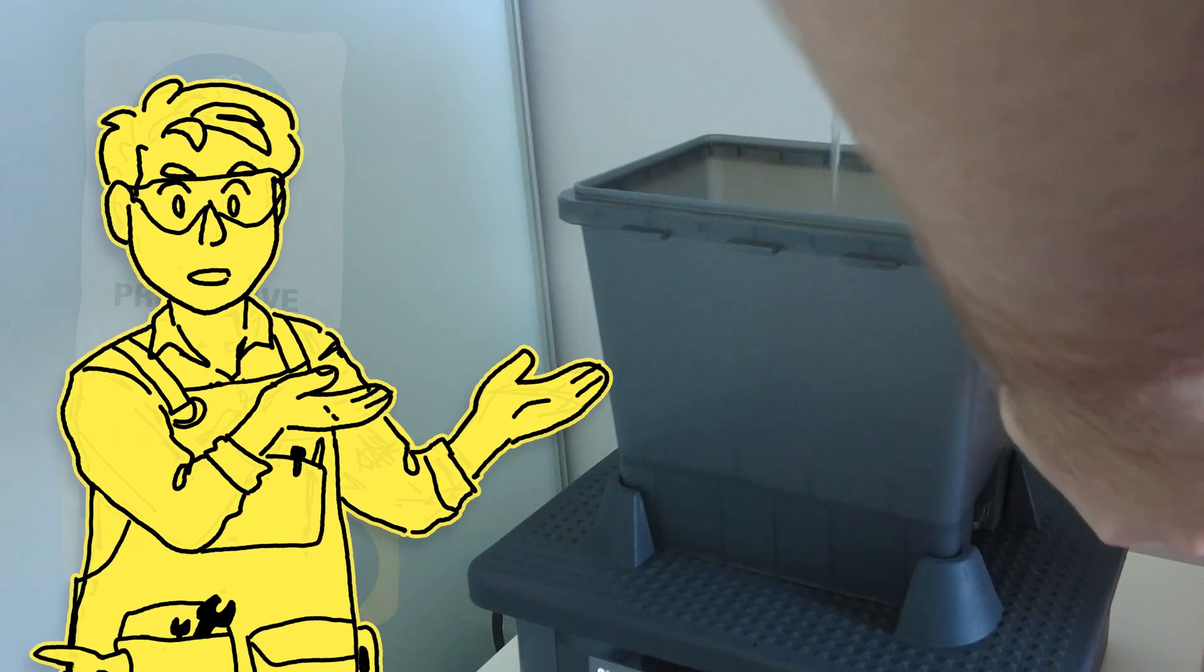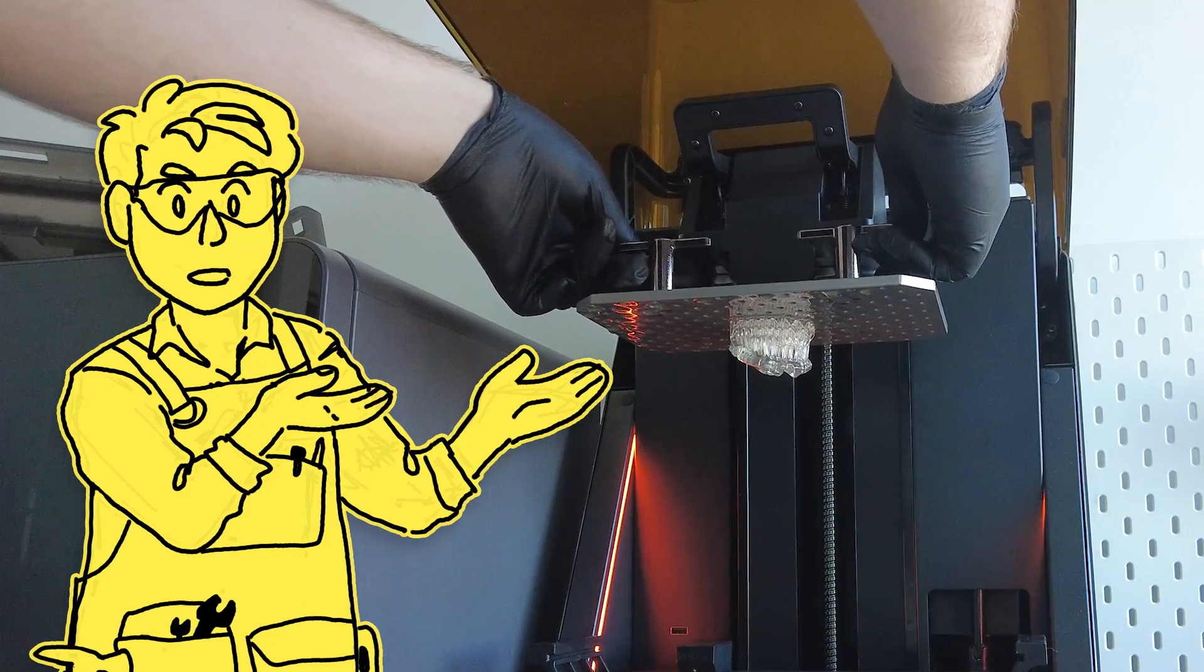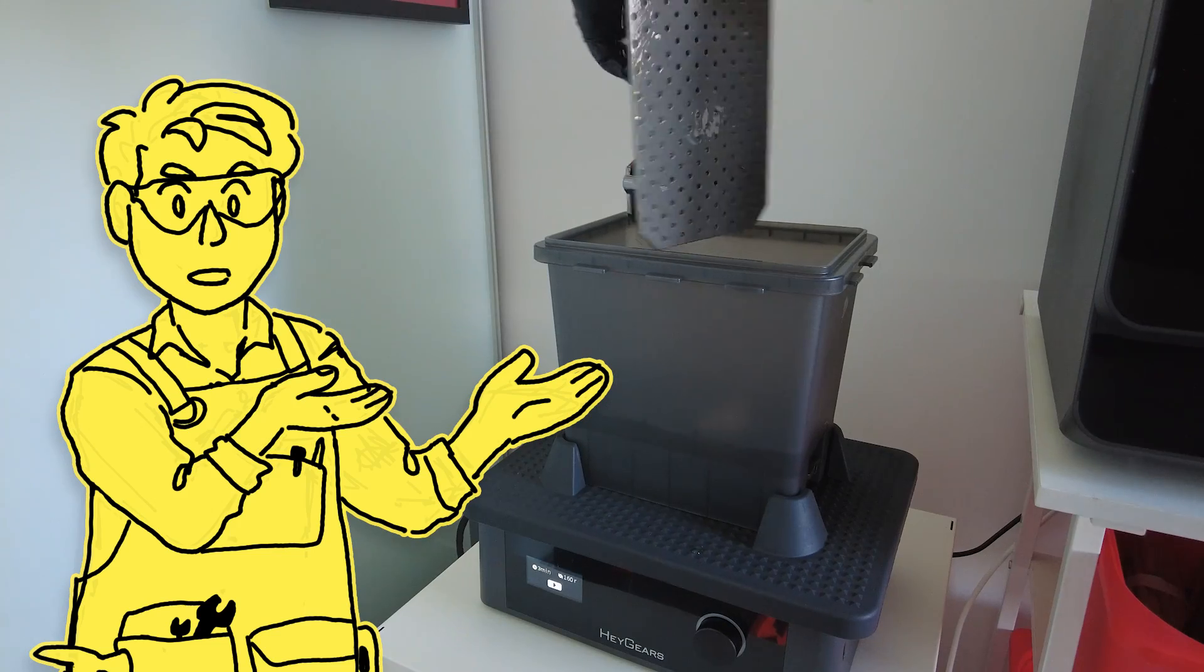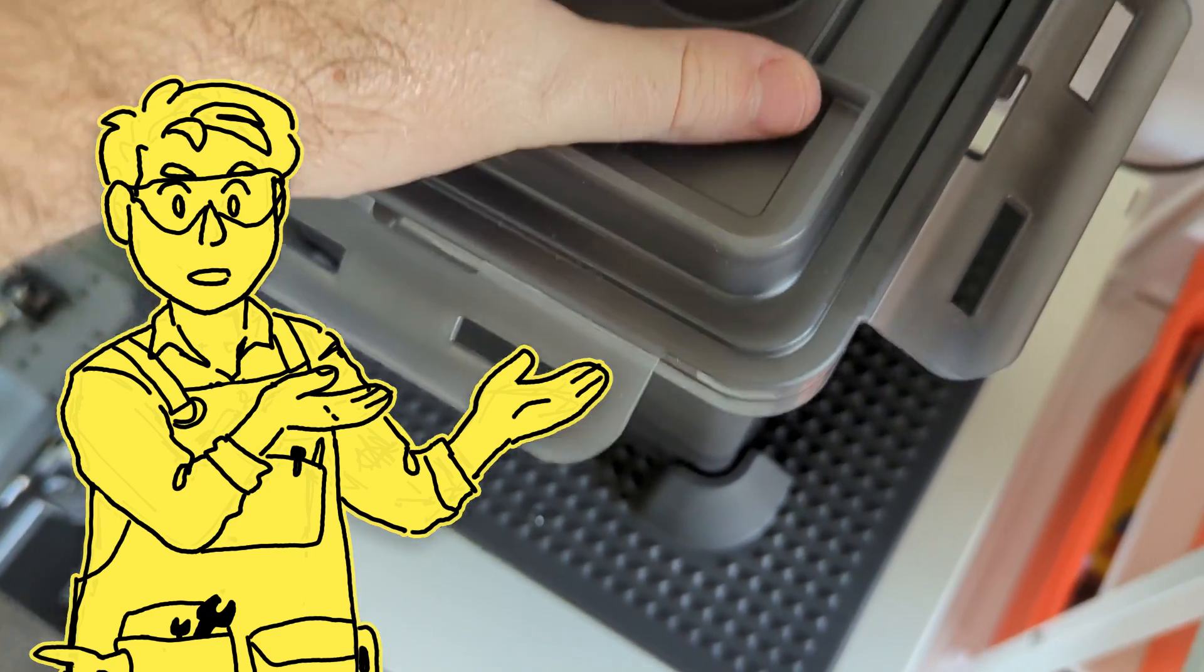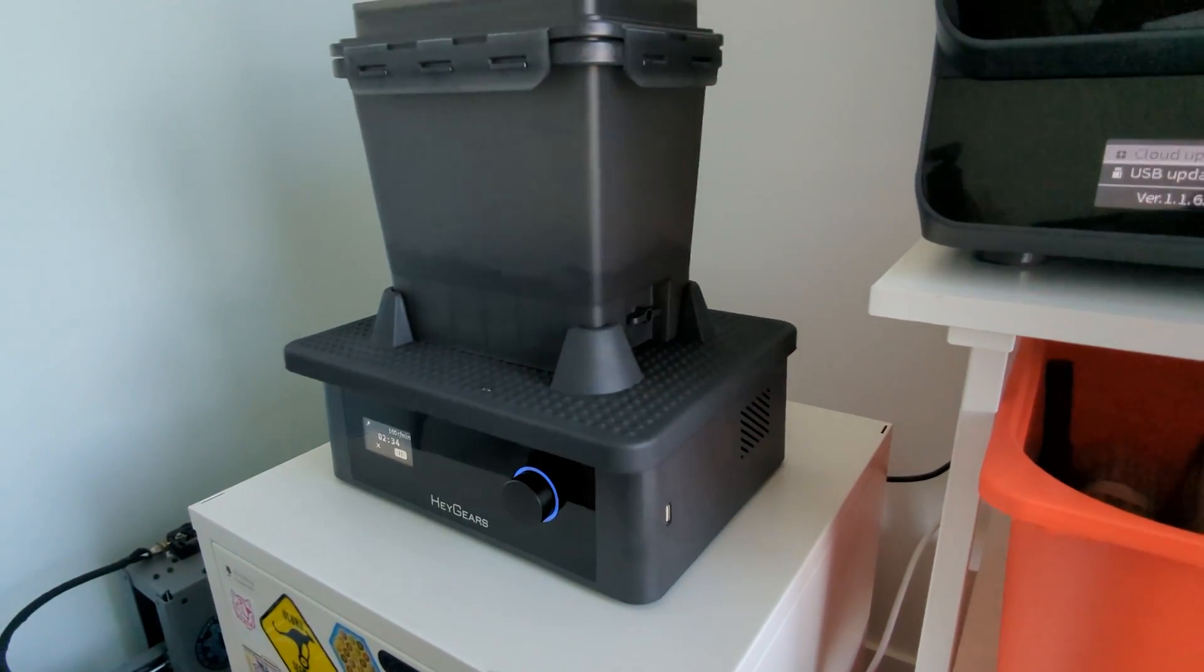First, I filled one of the boxes maybe a quarter of the way with isopropyl alcohol. And then after I removed the build platform from the printer, I carefully used the scraper to remove the print, then placed it into the box with the isopropyl, put the lid on, then placed it onto the wash station and press start. This process removes all the excess resin that has coated the outside layer of the print.